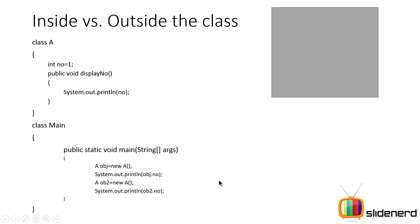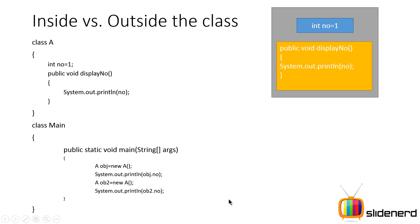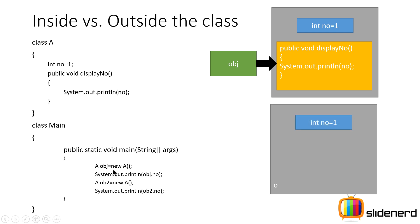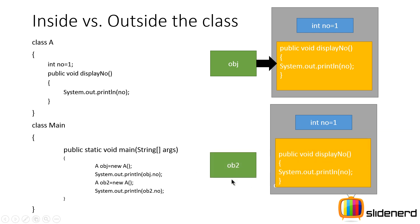When obj calls the display method, the number variable that gets printed belongs to obj. When ob2 calls the same method, 'int number equals one' is a separate variable created for object ob2, and the method prints ob2's number. The method definition is written only once, but depending on which object is calling the method, it refers to that object's particular variable.